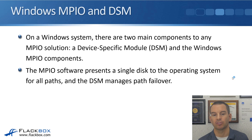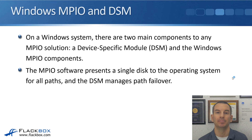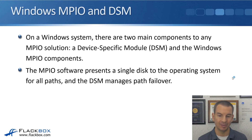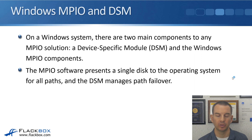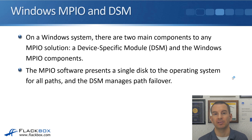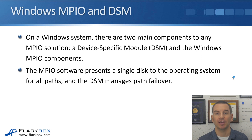On a Windows system, there are two main components to any MPIO solution: a device-specific module (DSM), and the Windows MPIO components. The MPIO software presents a single disk to the operating system for all paths, so that one LUN really does look like one LUN. The DSM software manages path failover if required.